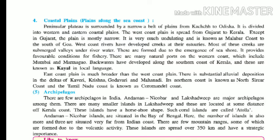The east coast plain is much broader than the west coast plain. There is substantial alluvial deposition in the deltas of the Kaveri river, making the soil very fertile. The northern coast is known as the Northern Circar coast and the Tamil Nadu coast is known as the Coromandel Coast.